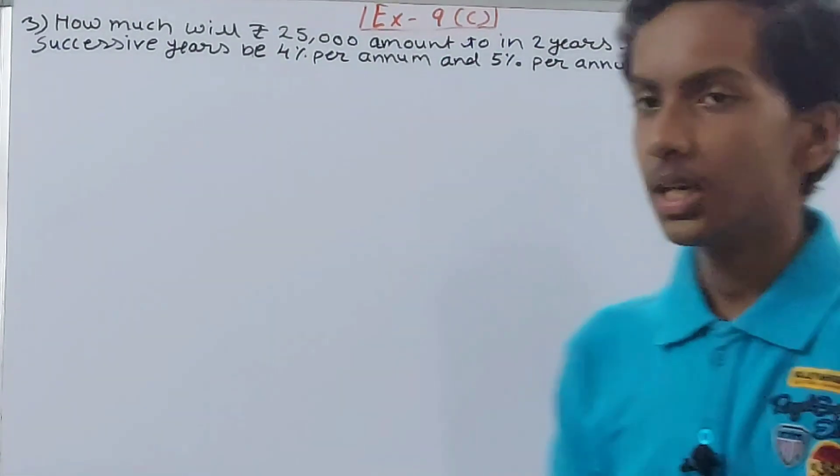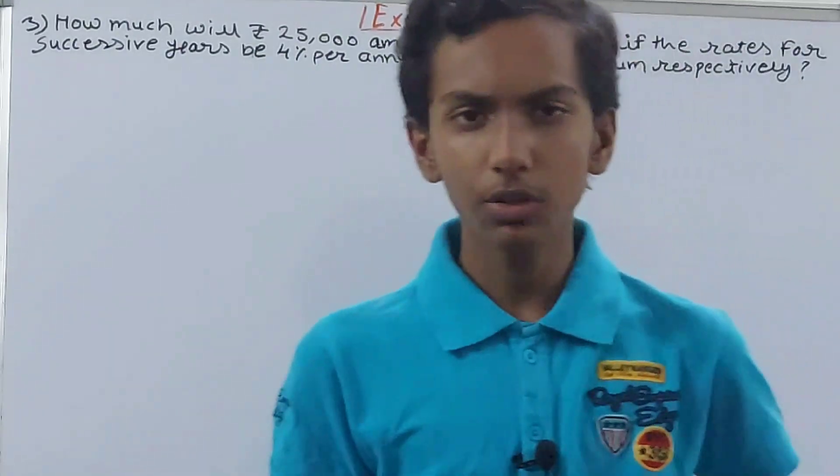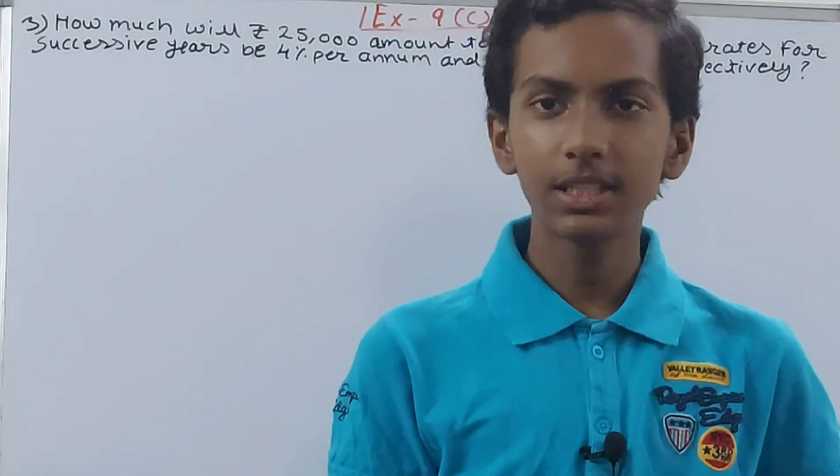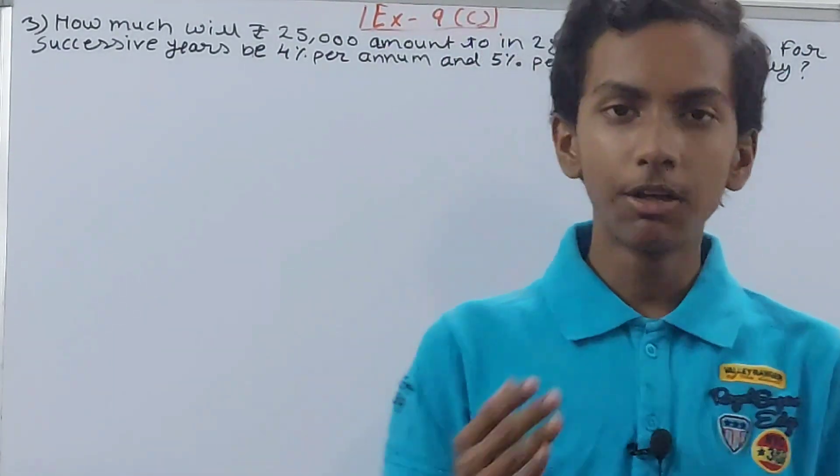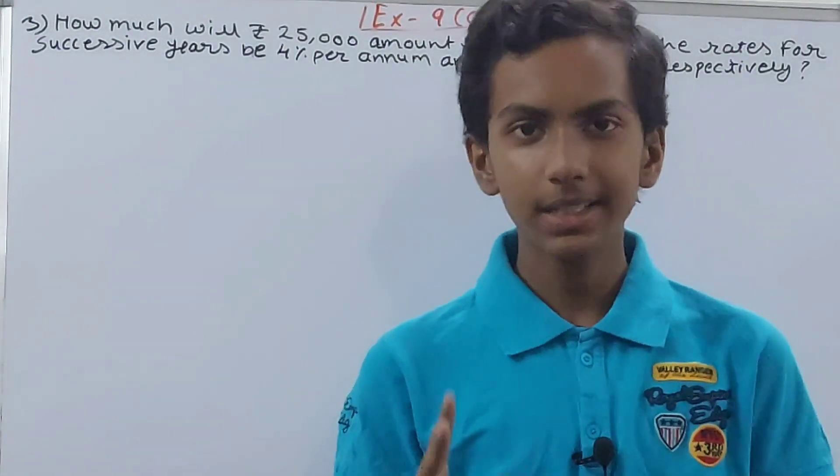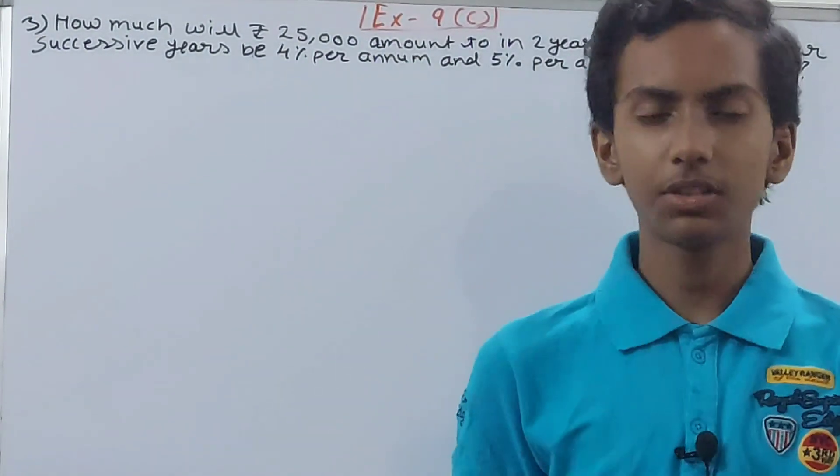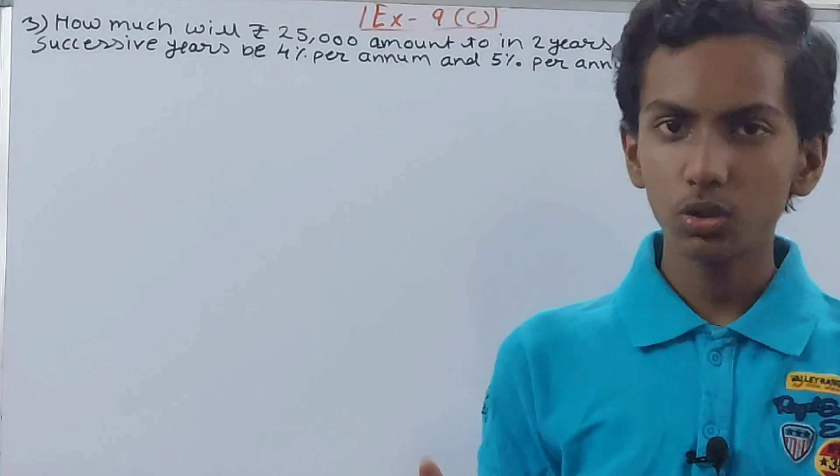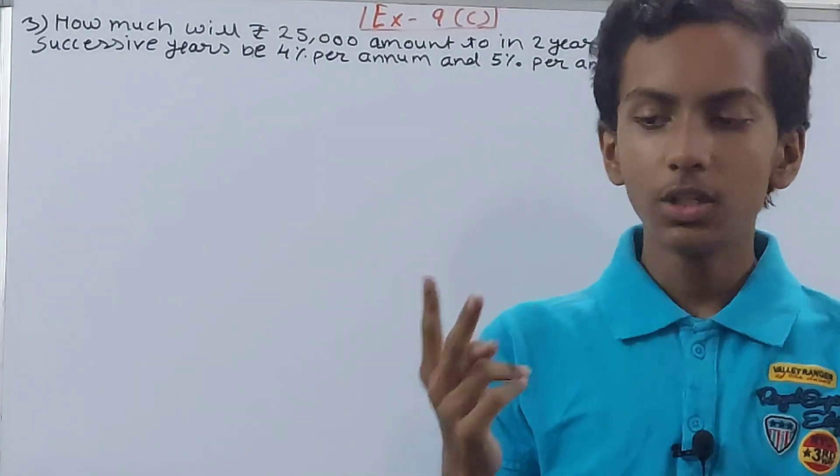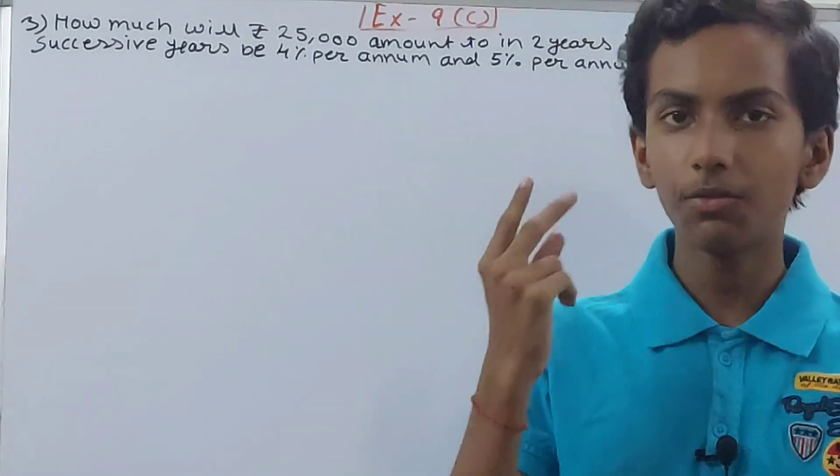5% per annum respectively? Now, what is the scenario here? Basically, it's saying that the rate for two years is different. Two successive years means one after another. So the rate for the first year is different and the rate for the second